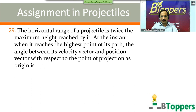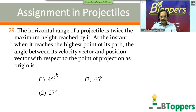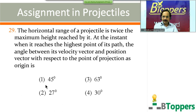Question number 29: the horizontal range of a projectile is twice the maximum height reached. At the instant when it reaches the highest point of its path, the angle between its velocity vector and the position vector with respect to the point of projection is — four options are shown on screen. Come on, try the question.